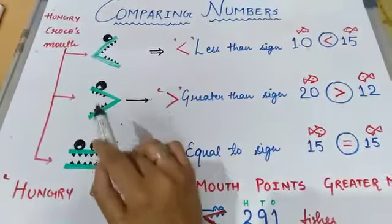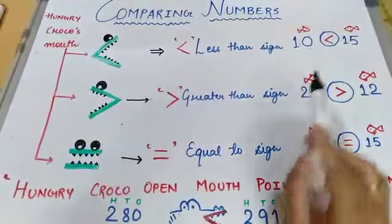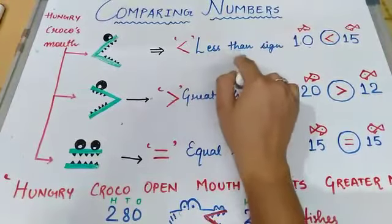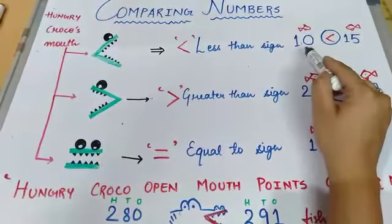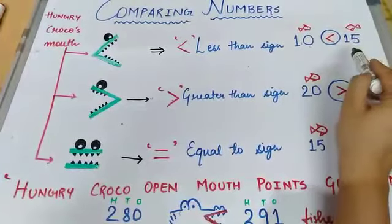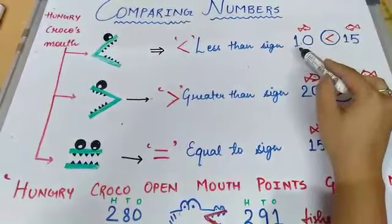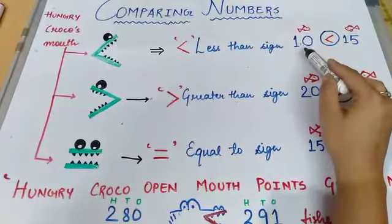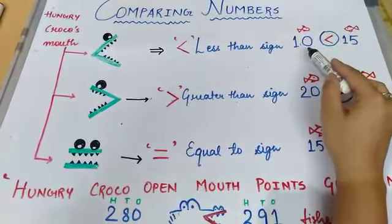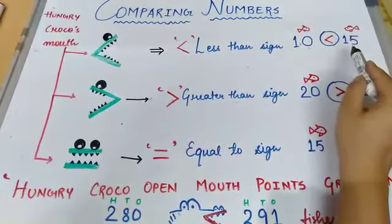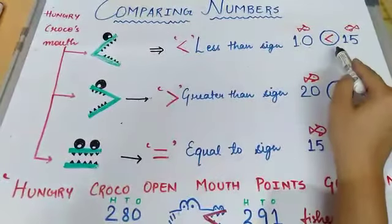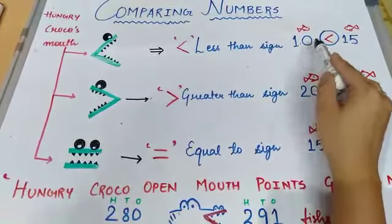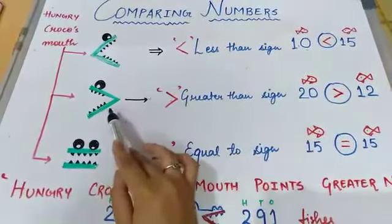Now as you know, the crocodile is very hungry, so he will open his mouth only for greater number of fishes. This side is closed and this is open, so this is less than sign. Why? Because see here, the fishes are 10 and here the fishes are 15. So 10 is greater than 15 or less than 15? Tell me, 10 is less than, chota hai na 15 se. So 10 fishes khayega ya 15 fishes khayega? 15 fishes. So this is the less than sign.